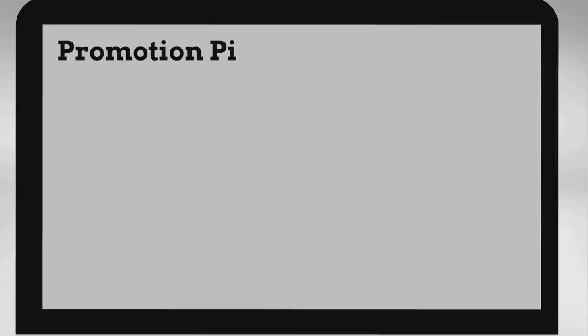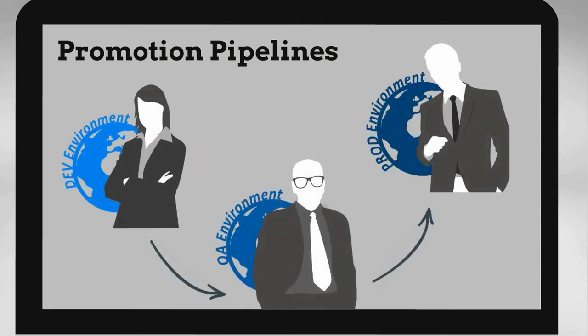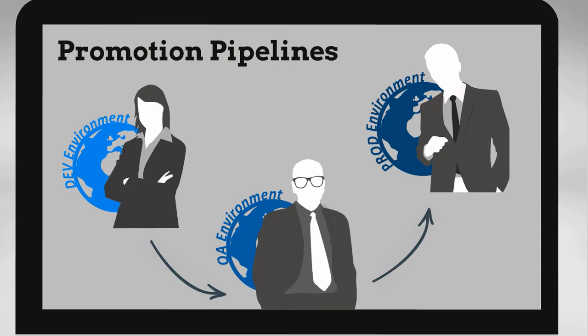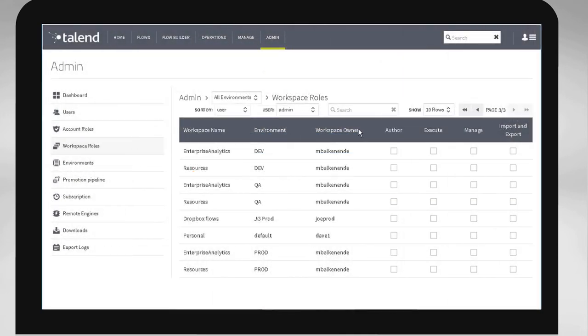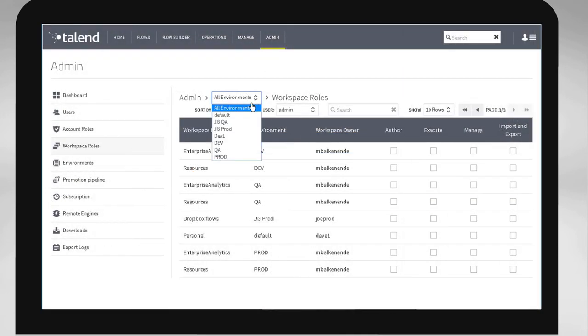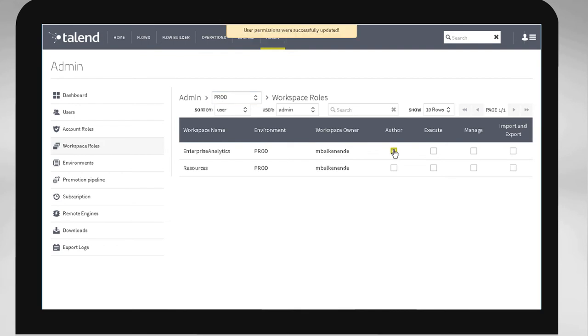In more detailed videos, we will show how, within the SDLC process, to create, implement, and use promotion pipelines — an established path allowing the promoting or passing of entire jobs, flows, or resources from one environment to another. We will first demonstrate how an administrator can create new environments and workspaces and assign privileges to different team members to increase efficiency.